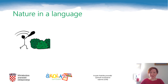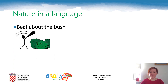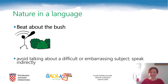Take a look at this picture: a man beating a bush. Read the phrase: 'beat about the bush.' Do you have any idea what it means? Is it really taking a bat and hitting a bush? No, of course not. It is an idiom — a phrase that has a completely different meaning than the words it is made of. This precise idiom means to avoid talking about a difficult or embarrassing subject; to speak indirectly. Or in Croatian: okolišati.